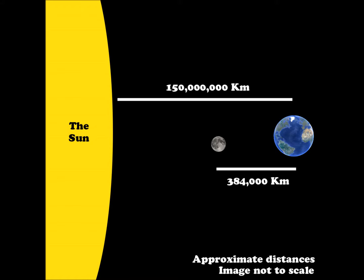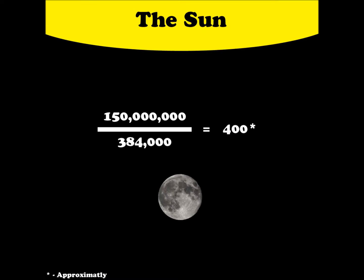To start off with, we're going to need to know the distance between the Earth and the Moon and the Earth and the Sun. The distance between the Earth and Moon is approximately 384,000 km, and the distance between the Earth and the Sun is approximately 150,000,000 km.